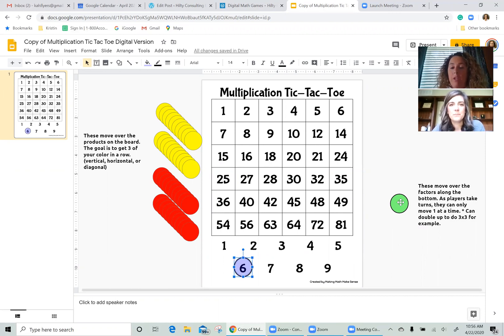So down here at the bottom, you have your factors and you have to put your chips over two of those factors. So I went ahead, since I'm player one, and I put my chips over six and three. I now have to multiply my two factors to come up with my product. My product is 18 and now I'm going to use my yellow counter to put it over top of that number 18.